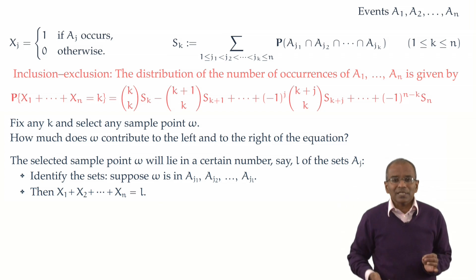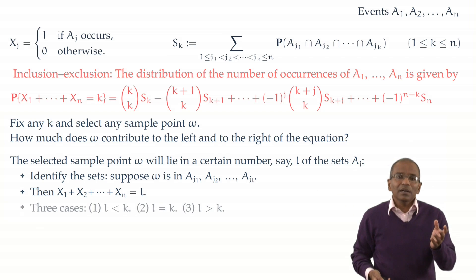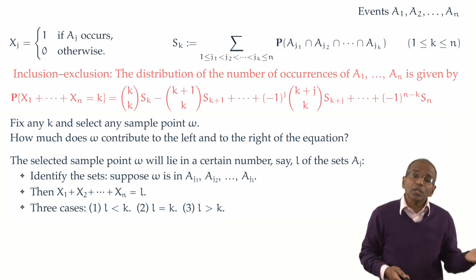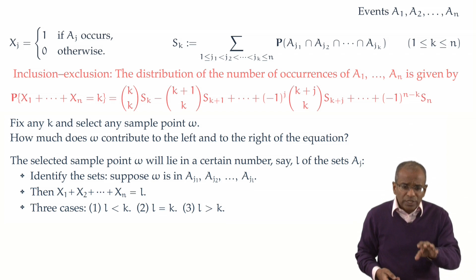There are now three cases, and here they are. The number of events that omega lies in could be either smaller than k, equal to k, or larger than k. We should take this in time. And so let's promptly do this.